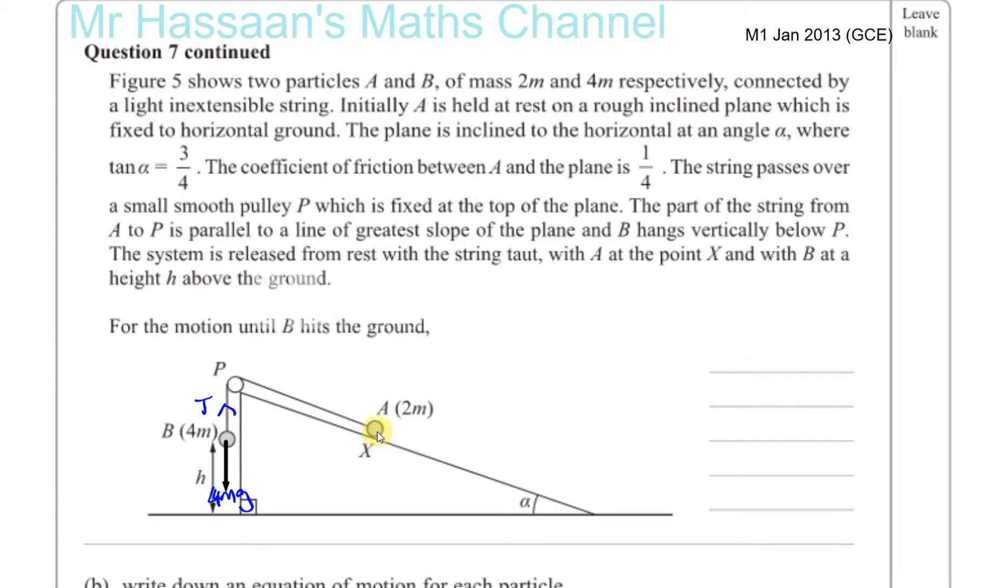And for A, it's mass is going to be acting straight down. That's its weight acting straight down. So that's going to be given by 2mg. Then you have the reaction force as A is in contact with the surface. So that's the reaction force, that's R. That's going to be important when dealing with the friction. We also have the tension in the string here, which is pulling up the plane. And you have the frictional force acting down the plane. Because this particle is moving up the plane, friction always acts opposing the motion or the tendency to move. So that's friction.